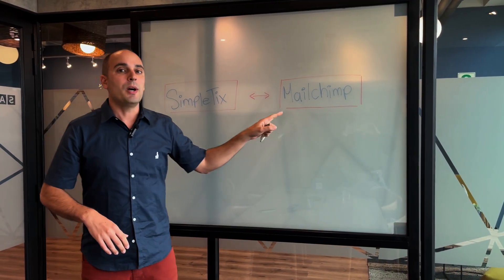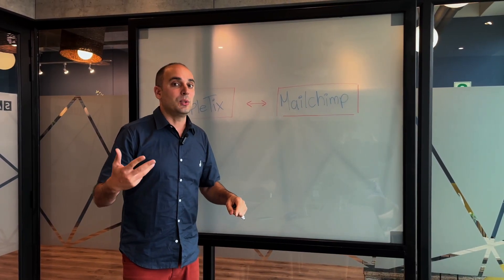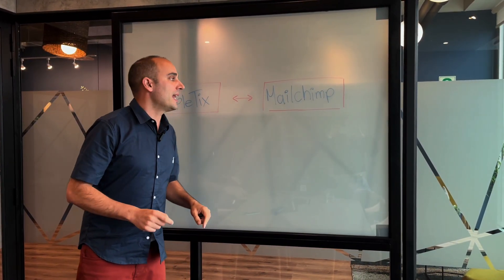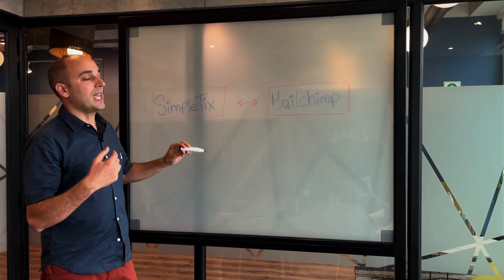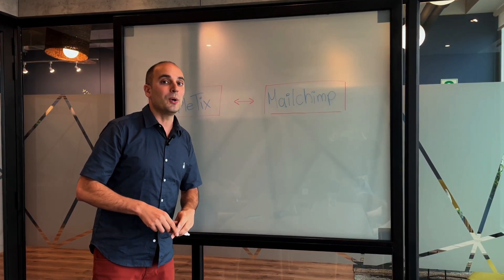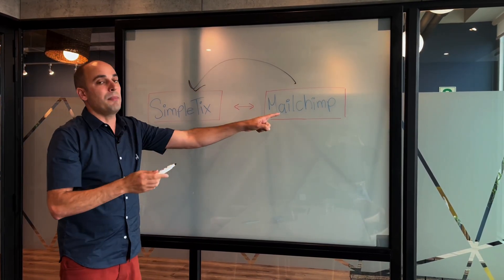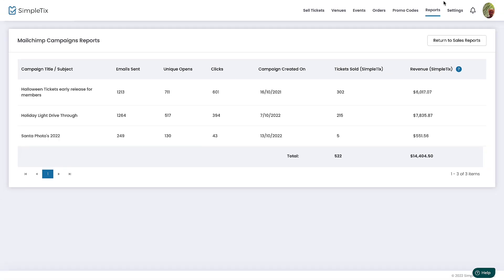Whenever you want to send an email blast through MailChimp, it's called a campaign. Every campaign that has links to events will include the MC ID — the campaign ID. SimpleTix tracks that, so if somebody clicks that link, we'll know it came from MailChimp and exactly which campaign it was. On the SimpleTix dashboard, you'll have one report listing all your MailChimp campaigns, showing the total emails sent, total clicks, opens, tickets sold, and total revenue from that campaign.